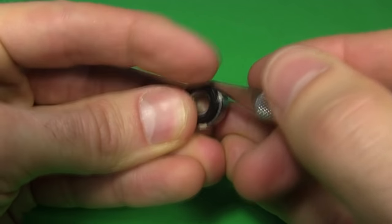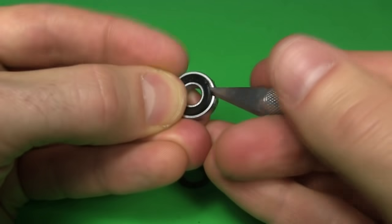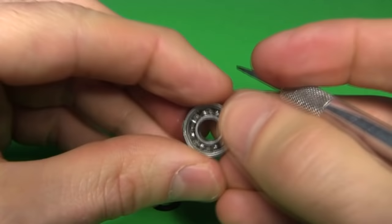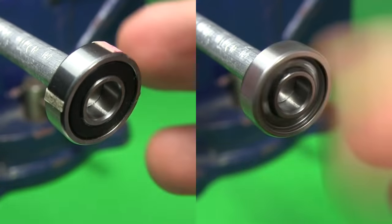First I remove the seals. Those seals were creating some friction, and the bearing now turns like this.